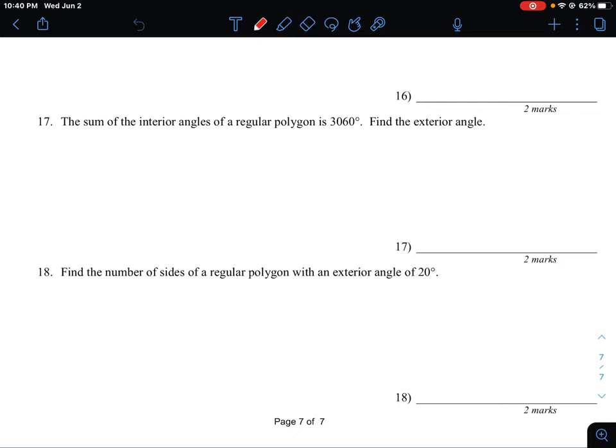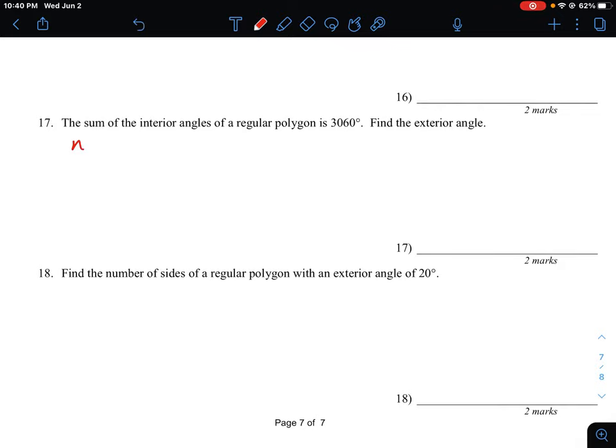The formula we need here is (n - 2) times 180, which gives us the total amount of degrees in a polygon. We are given that value right here. So this expression (n - 2) times 180 equals 3060 degrees.